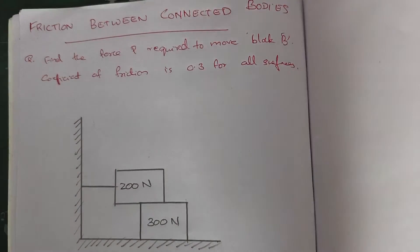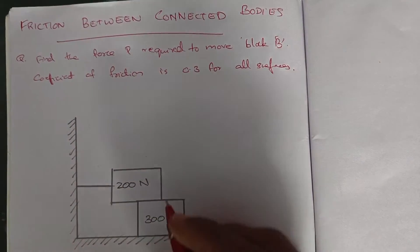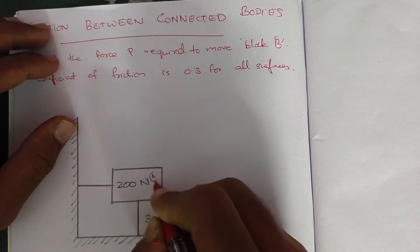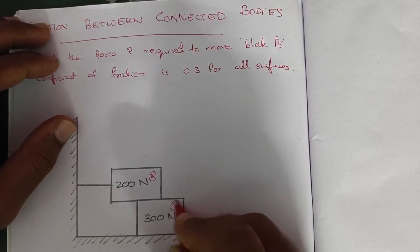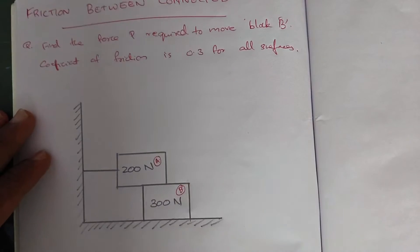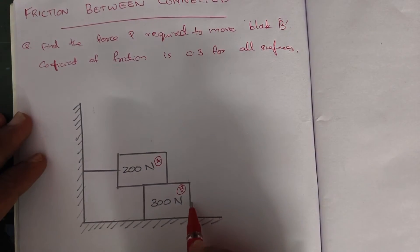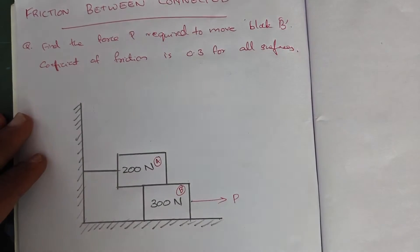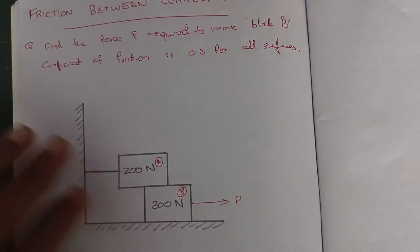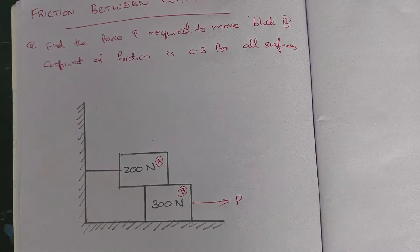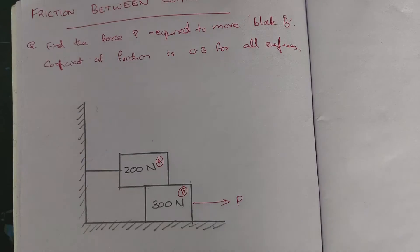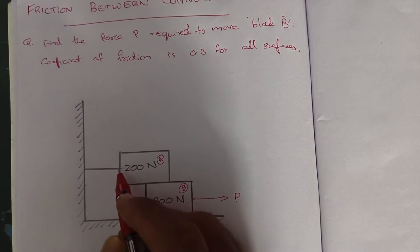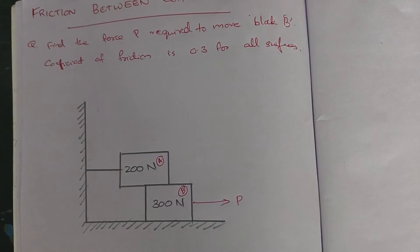This is block A and this is block B. We need to find the force P required to move block B. For block A, a string is attached to it, so there is a tensile force acting here.